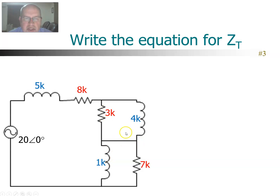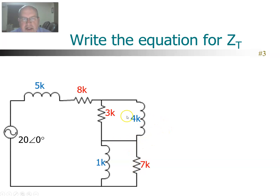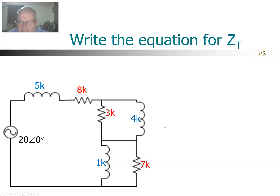It's not this branch in parallel with this branch. It's a 3K in parallel with 4K, and then that is in series with a 1K parallel 7K. Because of this line, it changes everything — it actually makes it two different parallel circuits. Knowing that, let's see if we can write the equation.